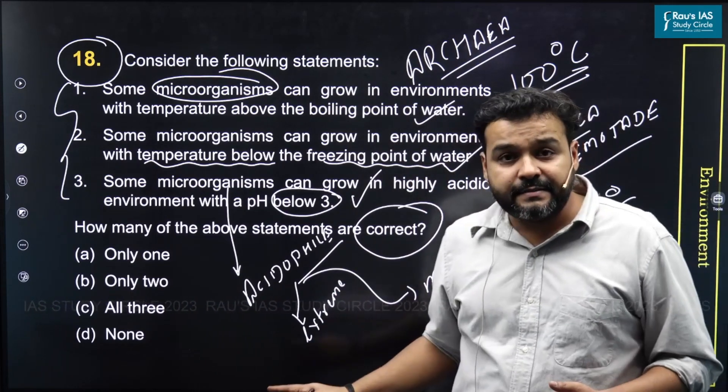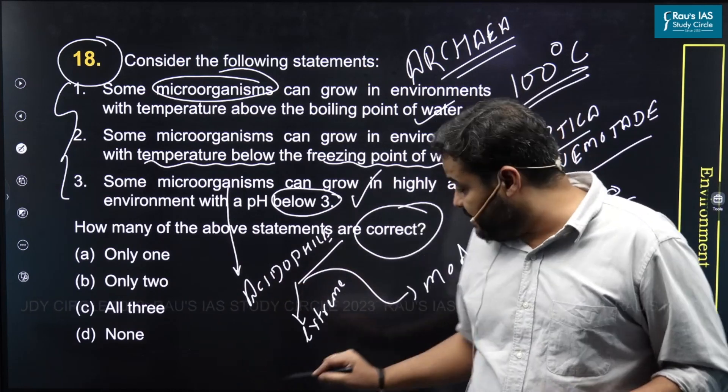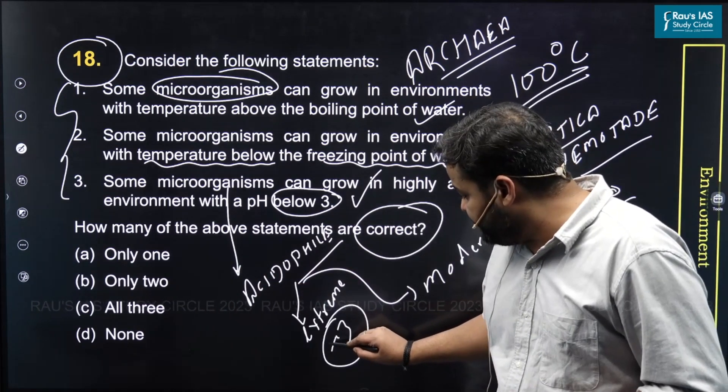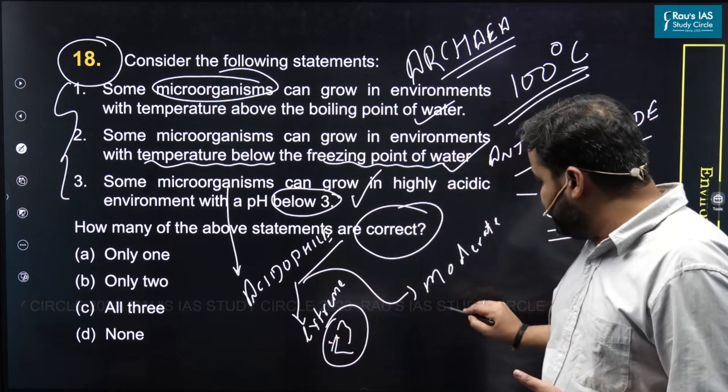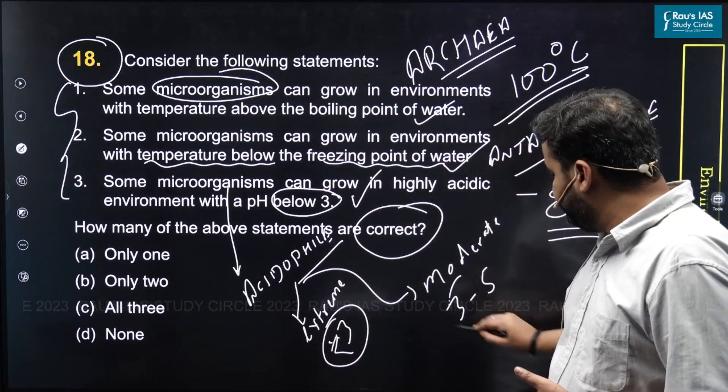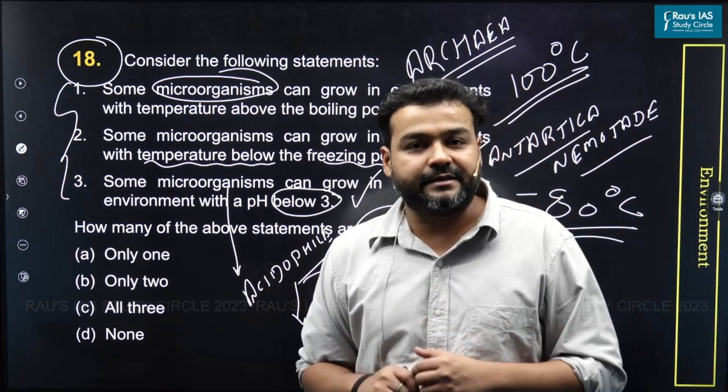Extreme acidophiles can survive pH levels of less than 3, while moderate acidophiles survive pH levels of 3 to 5, that is moderate acidity.